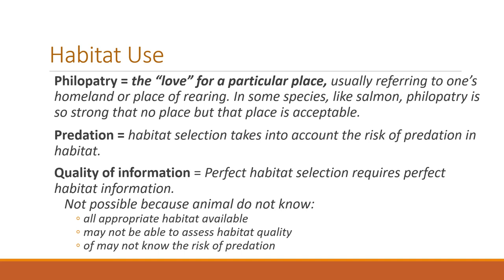Predation is also an interesting point — it does affect the quality of habitat and habitat selection, but it's really difficult to measure. Animals have a sense of risk of predation, but it's very difficult for us to account for when looking at habitat. Also remember that the quality of information animals have to assess habitat is not perfect — perfect habitat selection would require perfect habitat information. Animals don't know all the habitat available, may not be able to assess habitat quality, and may not know the risk of predation. All of these are also changing over time.